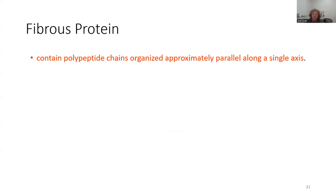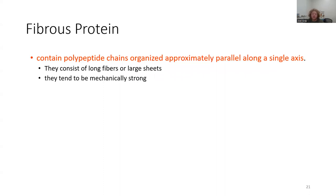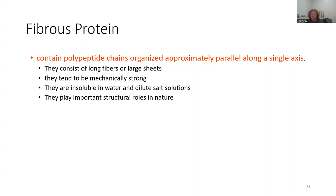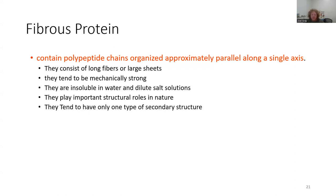Transitioning to our other types of proteins: fibrous proteins. Fibrous proteins contain polypeptide chains organized approximately parallel along a single axis. They consist of long fibers or large sheets. They tend to be mechanically very strong and rigid. They're insoluble in water and dilute salt solutions, and they play important structural roles in nature. They tend to have only one secondary structure.